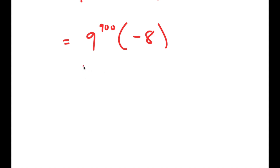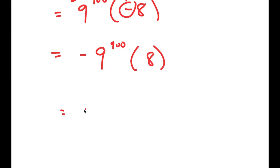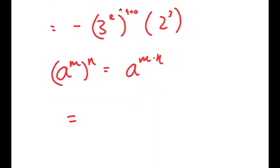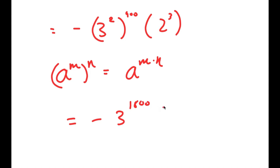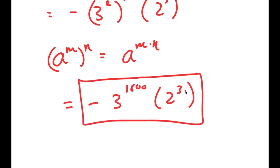Now I said I was going to simplify as much as possible. We can't get the exact value because 9^900 is such a big number, but we can get the simplified form. I'll move the negative sign to the front to get negative 9^900 times 8. Rewriting 9 as 3² and 8 as 2³, I get negative (3²)^900 times 2^3. Using the property (a^m)^n = a^(m×n), I get negative 3^1800 times 2^3. This is my final solution.